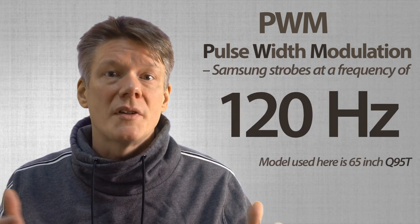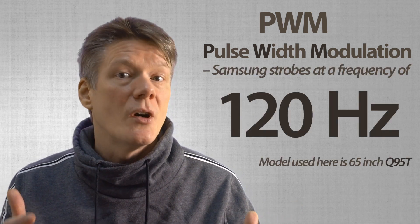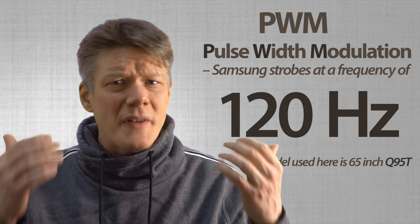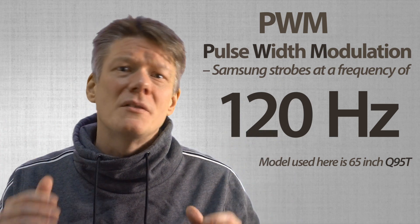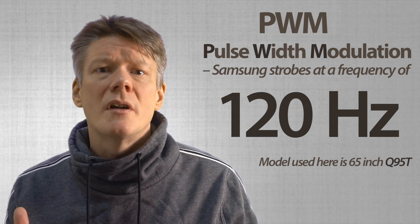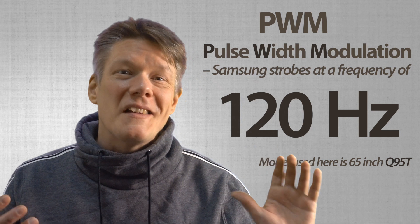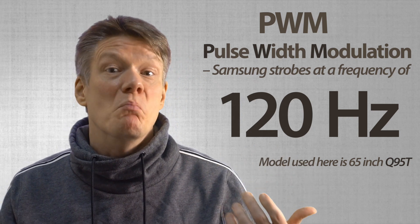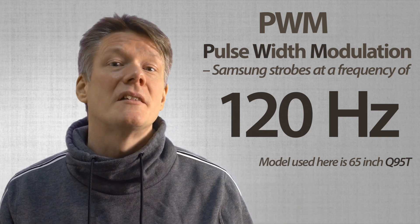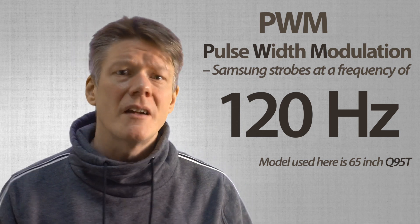The strobing on the Samsung is done at a fixed frequency of 120 Hz, which is considered a low frequency. Above 80 Hz is usually considered the limit where most humans will no longer notice flicker, but like everything related to biology and brains, this is not an absolute limit — you might be affected without actually knowing there is a flickering light source involved.